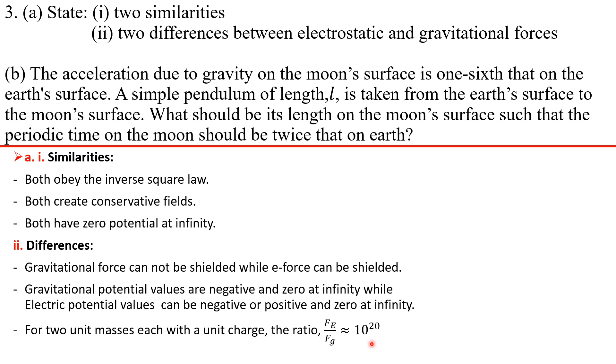Let's solve part two. The acceleration due to gravity on the moon's surface is one-sixth that on the earth's surface. A simple pendulum of length l is taken from the earth's surface to the moon's surface. What should be its length on the moon's surface such that the periodic time on the moon should be twice that on earth?